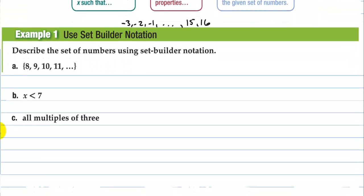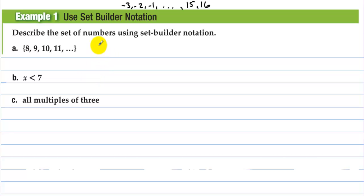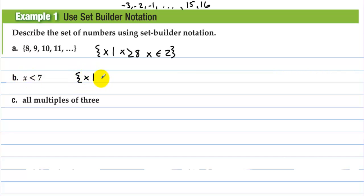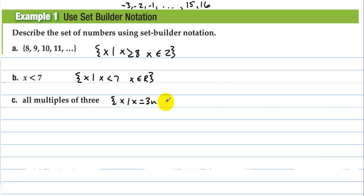Set builder notation: describe the set of numbers using set builder notation. Here we have x such that x is greater than or equal to eight, where x is an element of the integers. On this one we have x such that x is less than seven and x is an element of the real numbers. And then all multiples of three: x such that x equals three n, where n is an element of the integers.